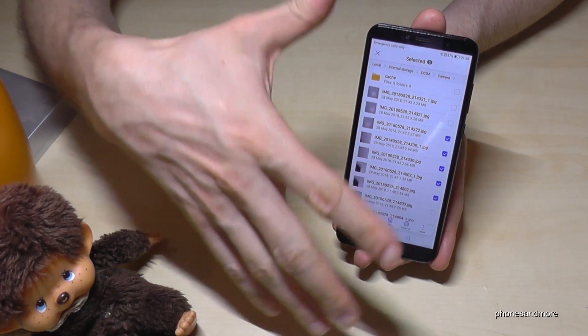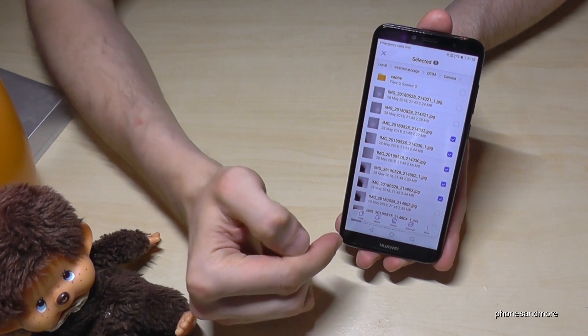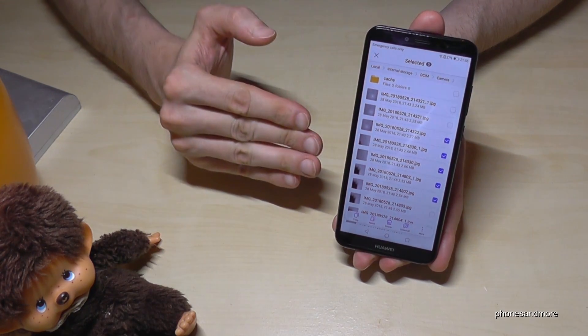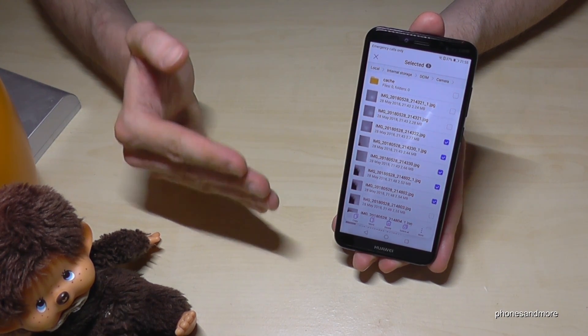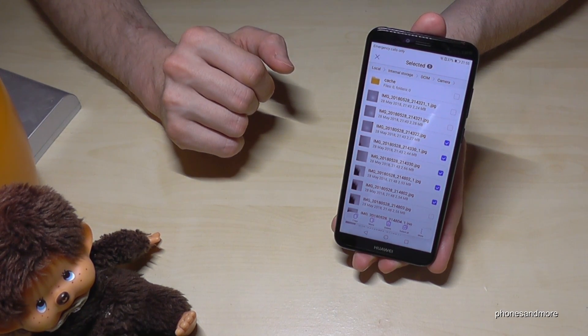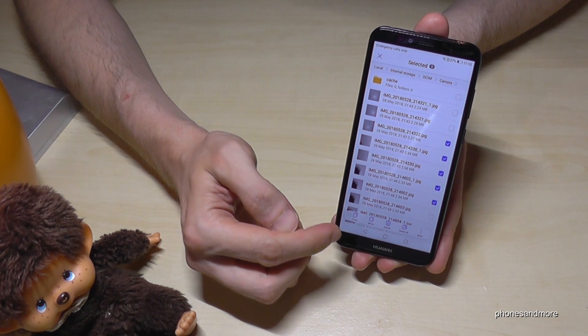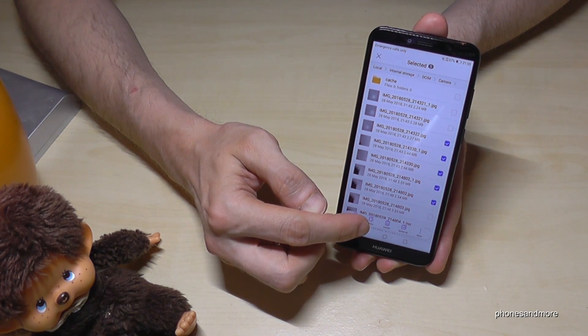Then you have to select them all and you can transfer with copy. But then you leave the original one at the internal storage. But you don't want it because I think you want to save a bit space on the internal storage. So it's better to go and move because if you move it, it will take the files and transfer completely to the microSD card.